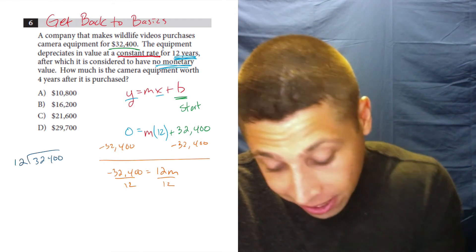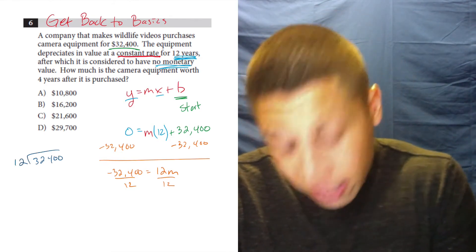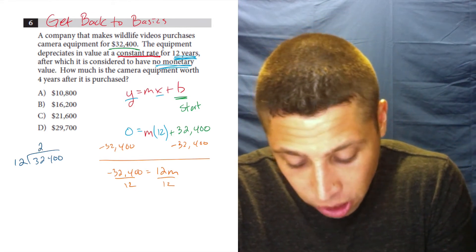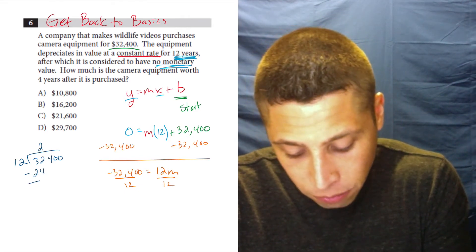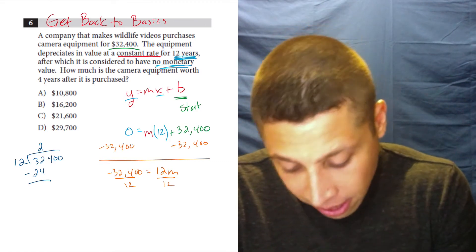So 32,400. Sometimes you have to do it in the SAT, so you've got to know how to do it. Here's the way to do it. 12 goes into 32, two times, two times 12 is 24. We subtract, and we get eight.